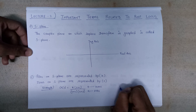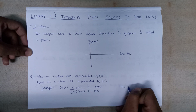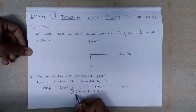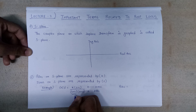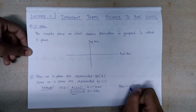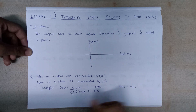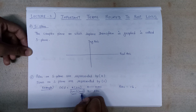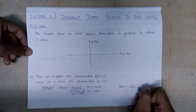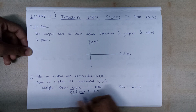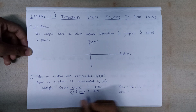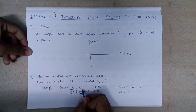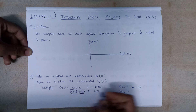For poles, equating (S+2) = 0 gives S = −2, and equating (S+3) = 0 gives S = −3. So we have poles at S = −2 and S = −3. For zeros, equating (S+1) = 0 gives S = −1, so we have one zero at S = −1.